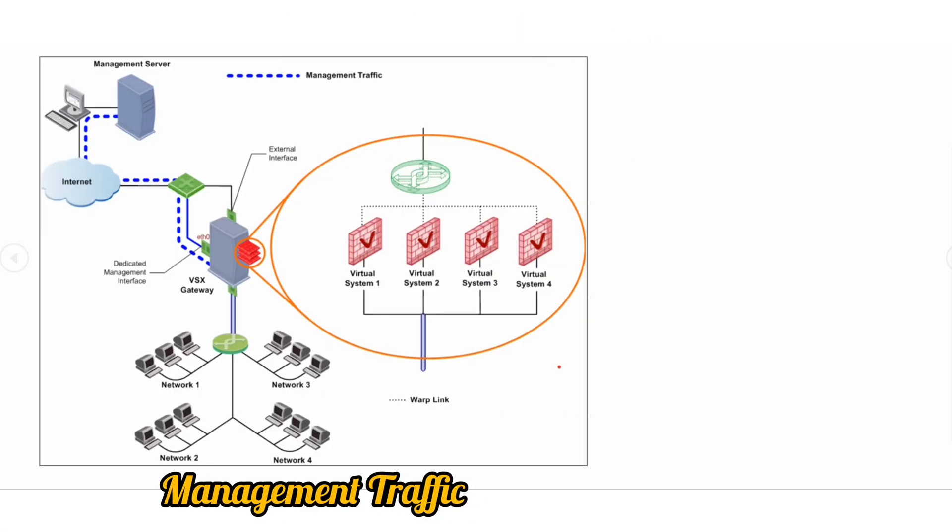Let's conclude this video with the management traffic. As you can see on the screen, we have the management server here which is located remotely. And we have a VSX gateway here, and this VSX gateway has these virtual systems. Behind these virtual systems we have these networks. What happens when the management server wants to communicate to VSX gateway or perform some configuration related activities on VSX gateway?